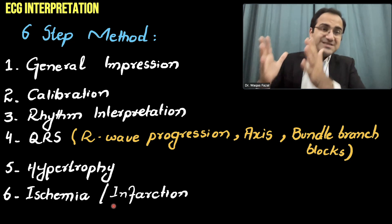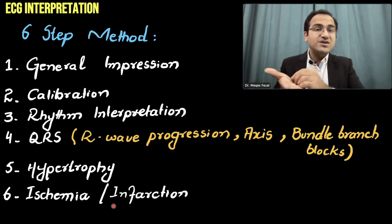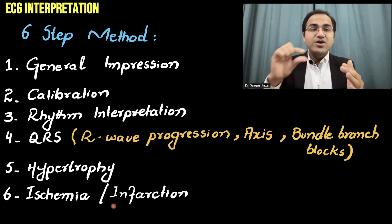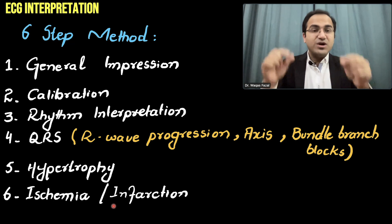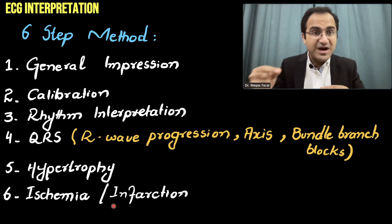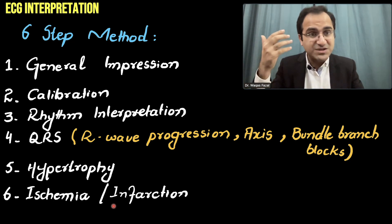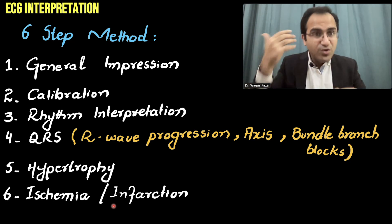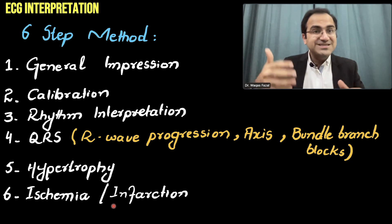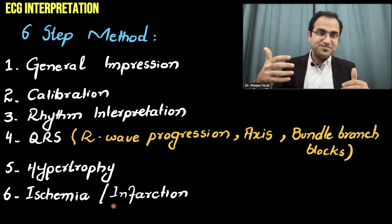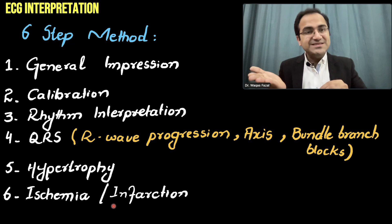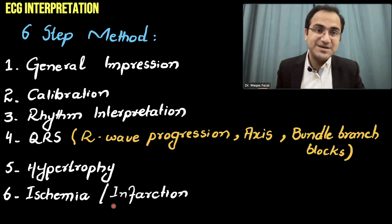But if in exams they give you an ECG and ask you to interpret it, you have to go through this stepwise manner and not jump to ischemia and infarction too quickly. You also look at the first 5 steps — hypertrophies, QRS complex, axis deviation, bundle branch block — because there are many important findings present in the ECG other than ischemia and infarction. So if they give you an ECG to interpret, you follow this 6-step method.